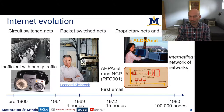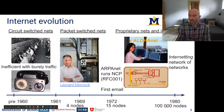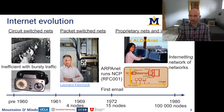By the end of the 1980s we had about 100,000 nodes on the Internet. The problem observed was that all these different networks in the early 80s were disconnected, so the challenge became how to connect different networks together through 'internetting' — a network of networks. That's where the word 'internet' comes from.